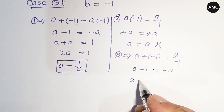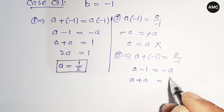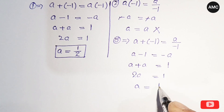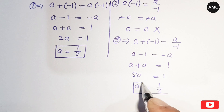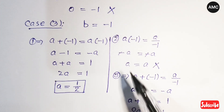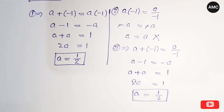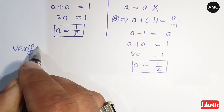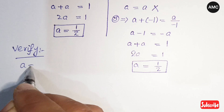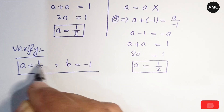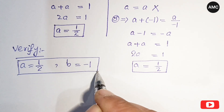Checking equation three with b equals minus one: a plus b equals a over b gives a minus one equals a over minus one, which also yields 2a equals one, so a equals one half. Both equations three and one confirm a equals one half when b equals minus one.